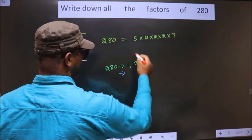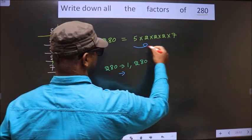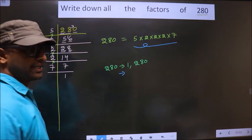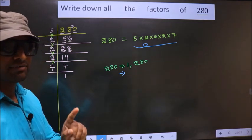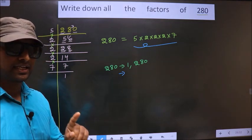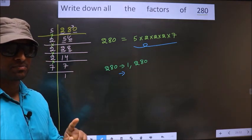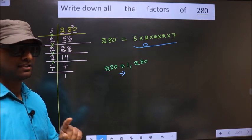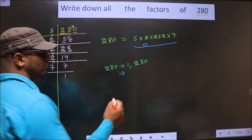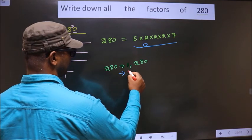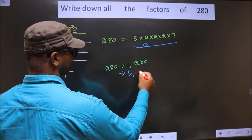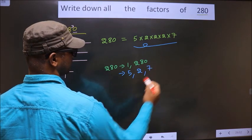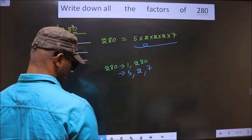Now from these prime factors, you select 1 different number at a time. Like that, how many numbers do we get? We get 5, 2, and 7.